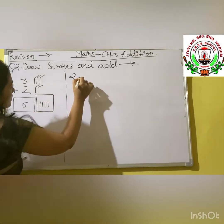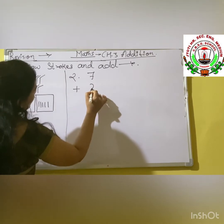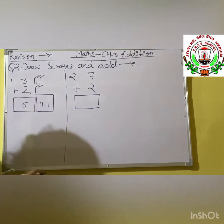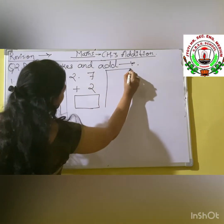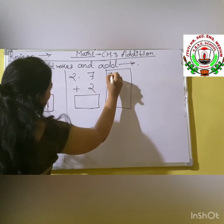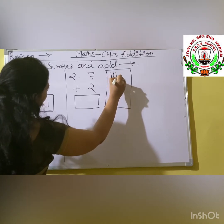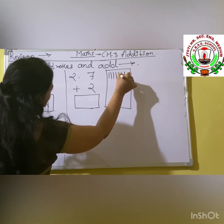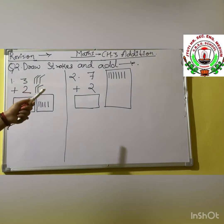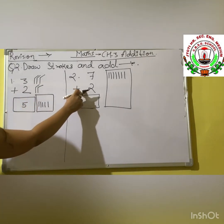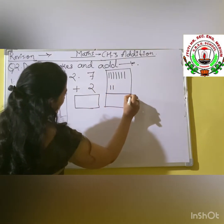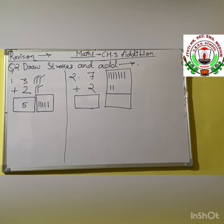Next one is 7 plus 2. First we draw how many strokes for the first number 7: 1, 2, 3, 4, 5, 6 and 7. So 7 strokes are drawn. Now we draw how many strokes for the second number: 2 — 1 and 2. Now we count all the strokes together.